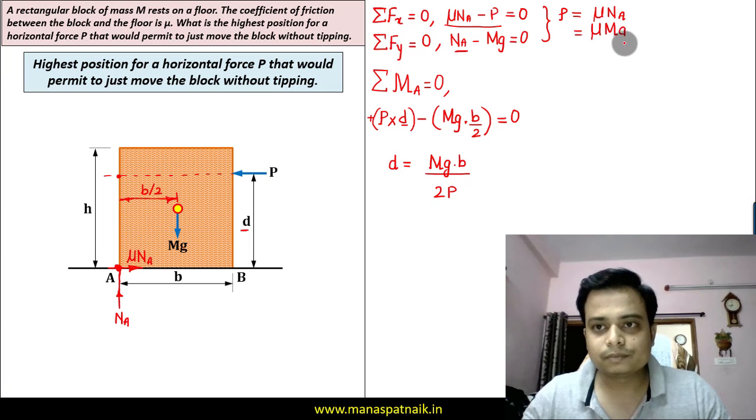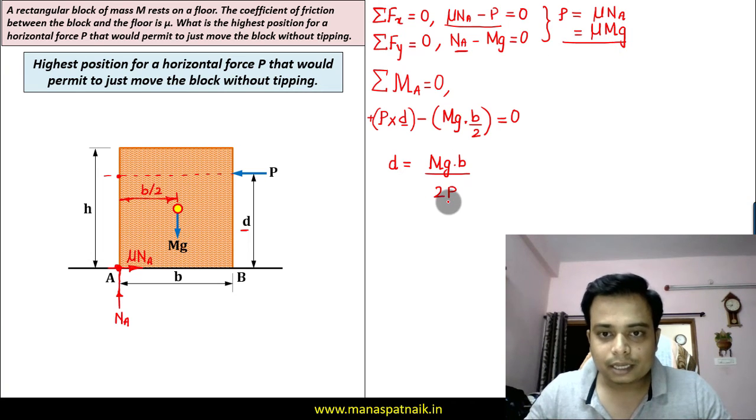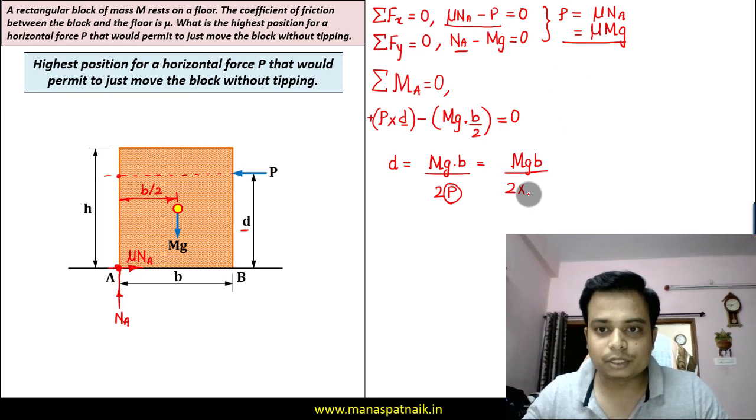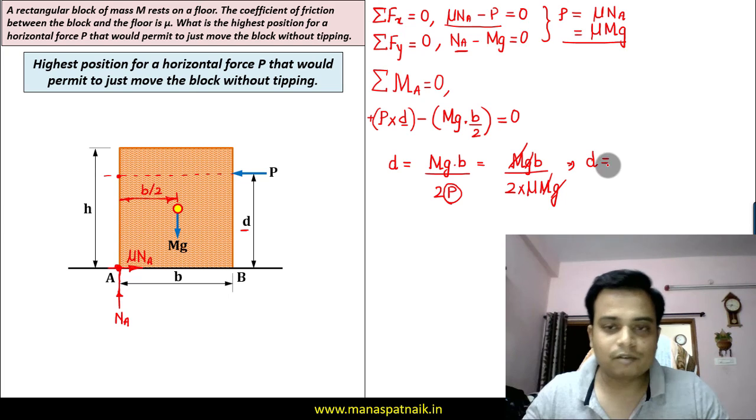So in place of this N_A what you can write as mg. So let us substitute μmg in place of this P. And when you do so you'll have this mgB in the numerator divided by 2 multiplied by μmg. Well, g and g cancel out, m and m cancel out, and that's the final value of D.